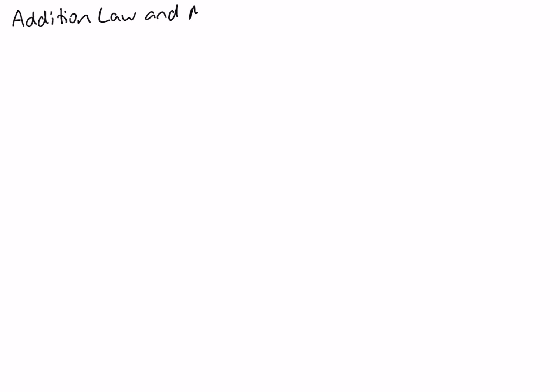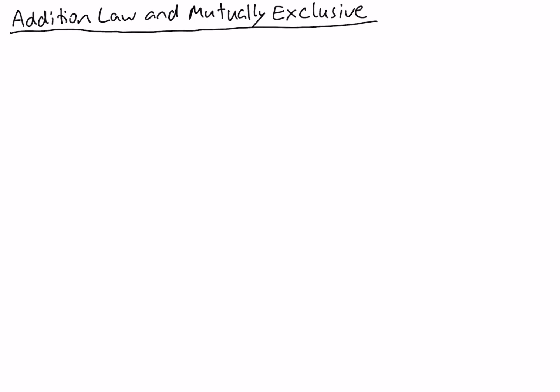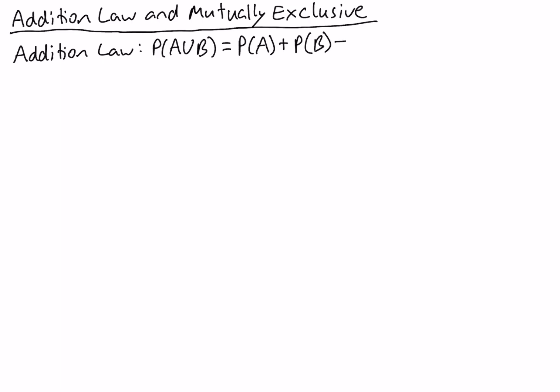We're going to be talking about the addition law and mutually exclusive events. The addition law is used to calculate the probability of the union of two events. Suppose we want to calculate the probability of A union B. The addition law says that this is equal to the probability of A plus the probability of B minus the probability of A intersection B.